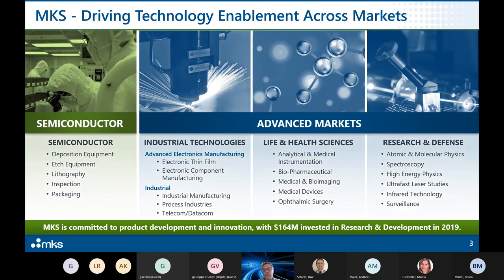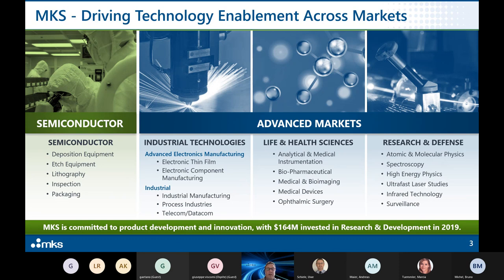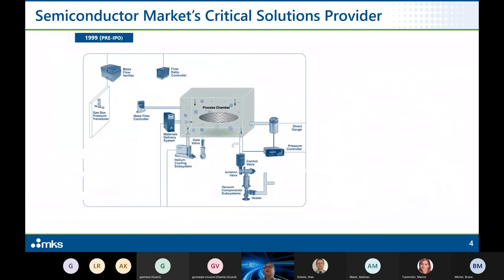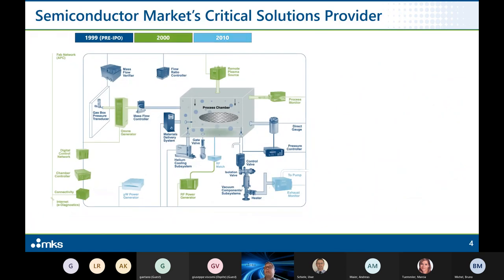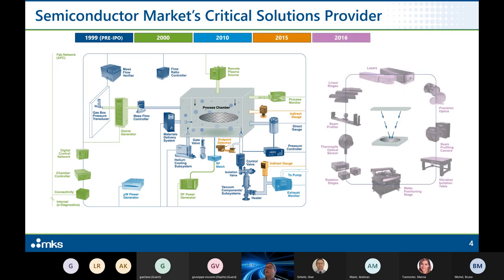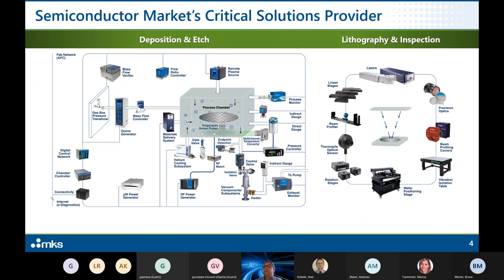On the next slide you can see how MKS's product range has developed over time — it's grown very fast. On the right side you see the solutions for around the process chamber, which are mainly the VNA products. VNA is the division of vacuum and analysis, which I belong to. On the left side you see the instruments provided around the work piece.